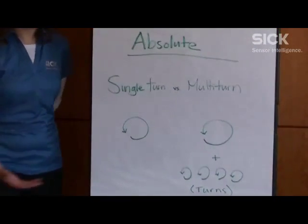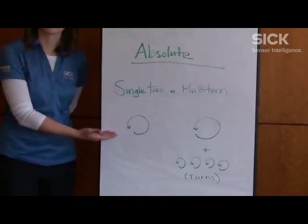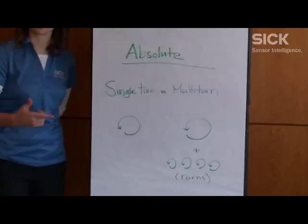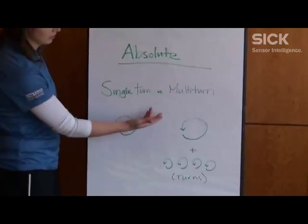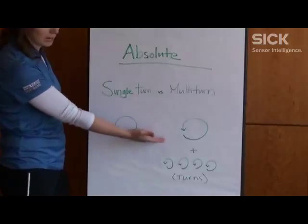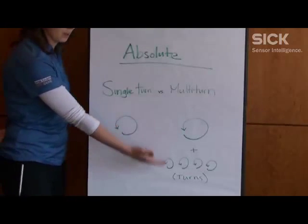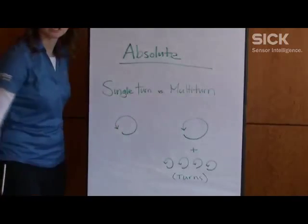The difference between these two is a single turn will keep track of the position within one turn of the encoder itself. A multi-turn encoder will keep track of that single turn position as well as the number of turns that the encoder is taking.